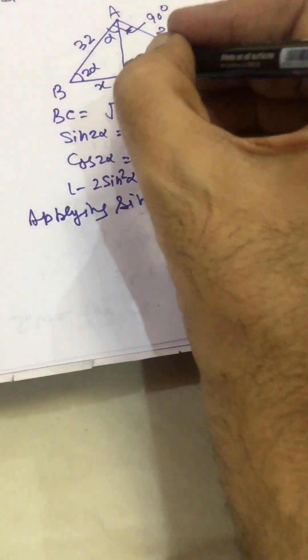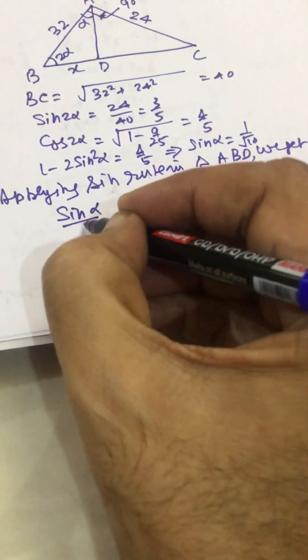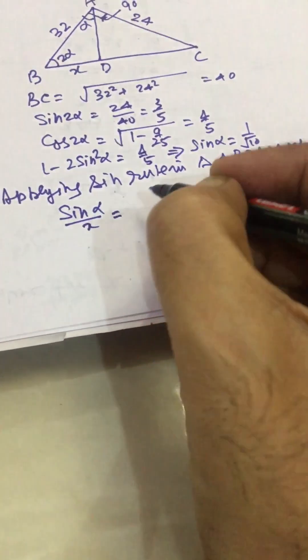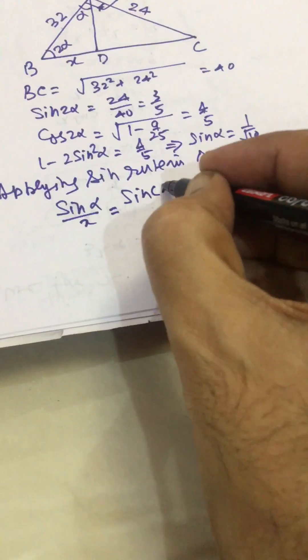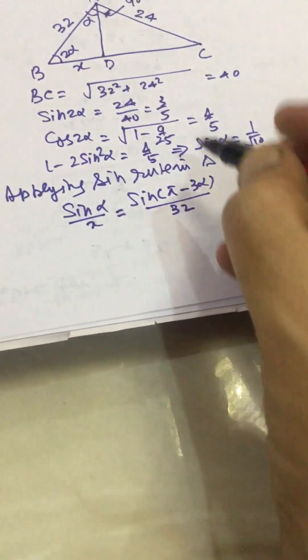Let it be D. We get sin α upon x equal to sin(π minus 3α) upon 32, because this angle will be π minus 3α or π minus 3α. This becomes sin 3α upon 32.